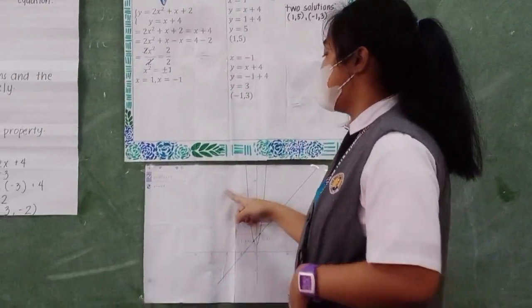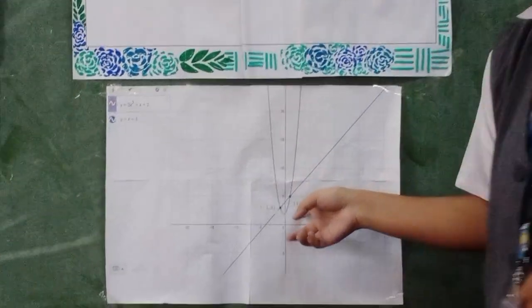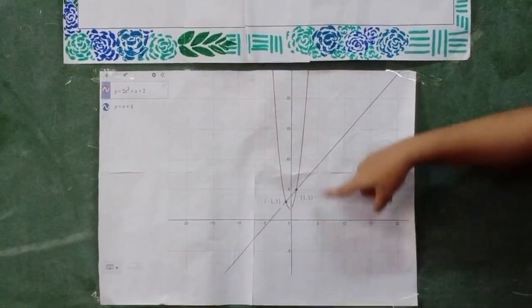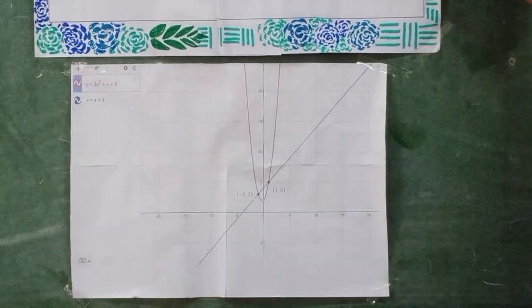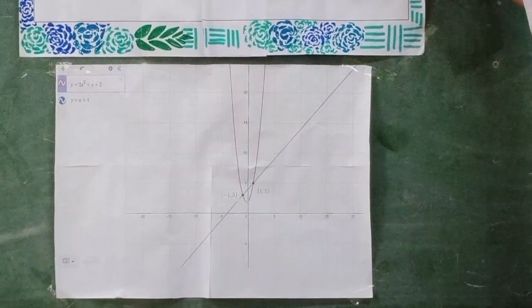This is how the equation would look like in a graph. So overall, this system of nonlinear equations has two solutions, which are (1, 5) and (-1, 3). Thank you.